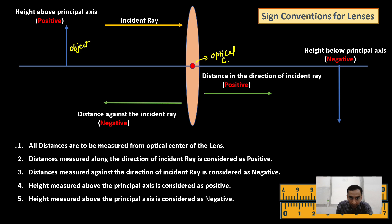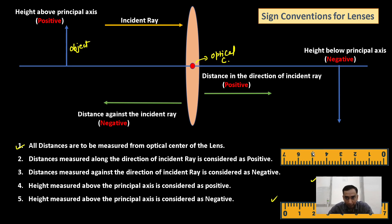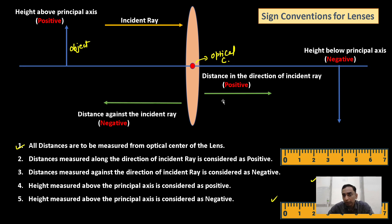All distances are to be measured from the optical center of the lens. I have kept two scales here purposefully because of this. Now, suppose this is my scale — it is an inverted scale placed purposefully. That is due to the fact that the 0 of the scale has to be put at the optical center.